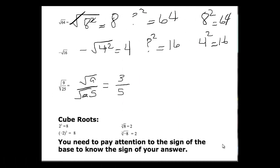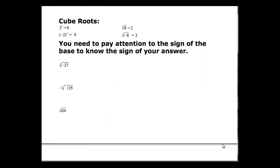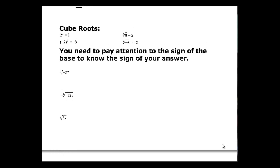Alright, let's move on to cube roots. When we talk about cube roots, we need to just find out something times itself 3 times that gives us our number. So if we have 2 times itself 3 times, we get 8. So the cube root of 8 is really the cube root of 2 cubed or 2.